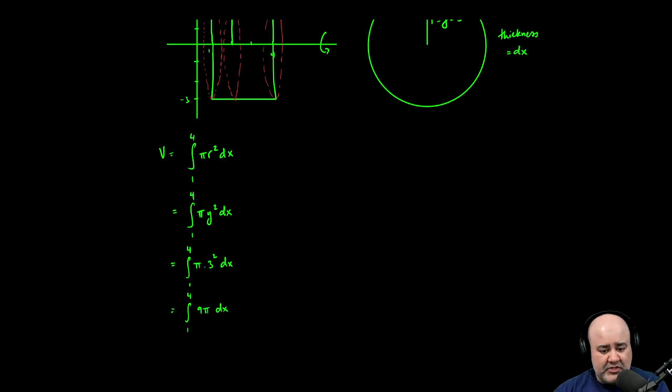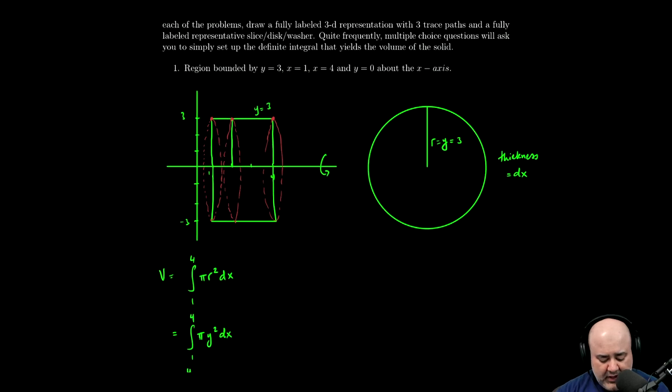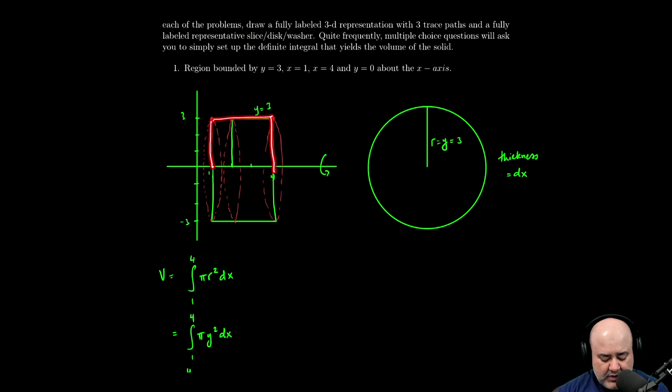I'm leaving finishing this off as an exercise to you guys so you can practice some integration techniques. But if the question had said, set up the integral that gives the volume generated by revolving or rotating the region bounded by y equals three, x equals one, x equals four, and the x-axis about the x-axis, that's what you found.